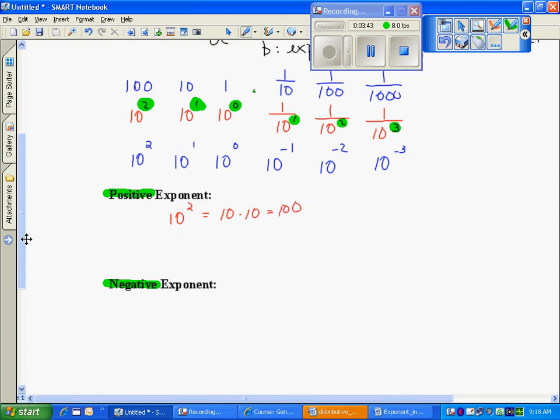Another example might be a fraction, one-half cubed. What we're going to do is just expand that. It simply represents one-half times itself three times. Multiplying fractions, multiply the numerator, multiplying the denominator. Two times two is four, four times two is eight.